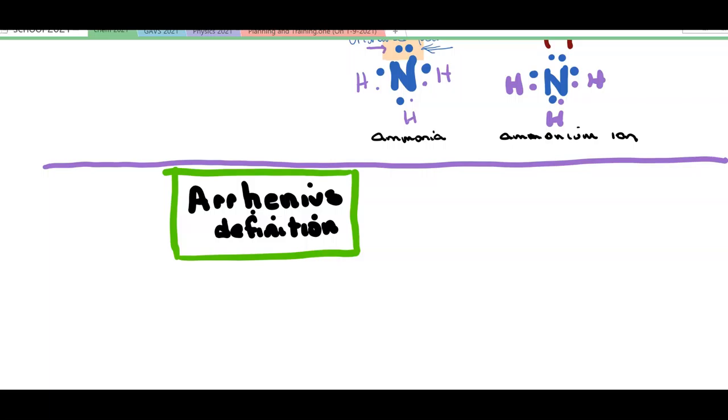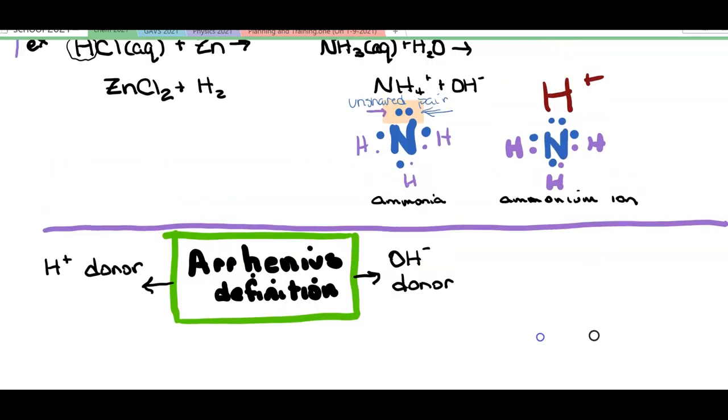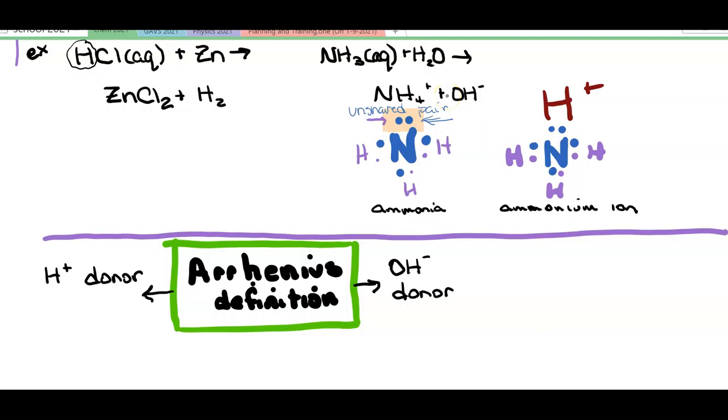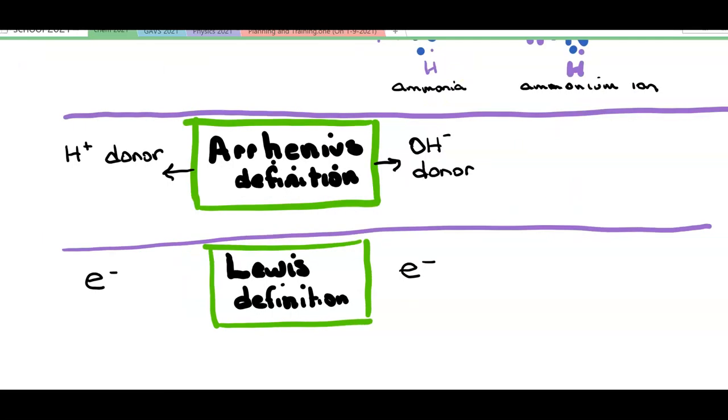We're going to use mostly the Bronsted-Lowry definition, but I want you to know that there's an older definition. Before there was a greater understanding of protons and electrons, that definition didn't sound too different. It was a hydrogen donor, and the base was where the difference was. It was a hydroxide ion donor, and we learned that no, that's not really what's going on. As we saw in the case of ammonia, we weren't donating a hydroxide ion. We were actually creating one by accepting a hydrogen ion.